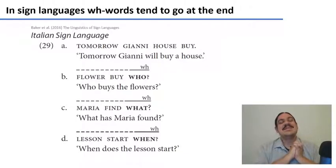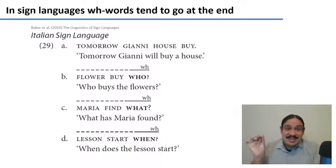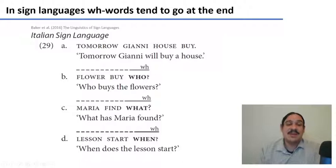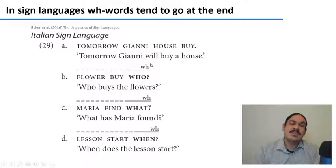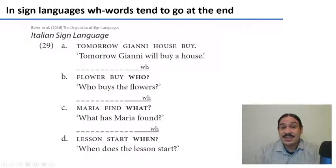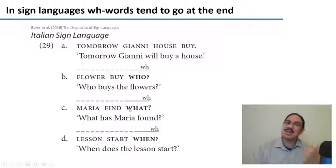Here is another example. This pattern of moving wh-words towards the end of the sentence is very prevalent in sign languages. For example, in Italian Sign Language: 'who buys the flowers?' becomes 'flower buy who?'; 'Maria find what?'; 'lessons start when?' In ASL and Italian Sign Language, and in most sign languages, you're going to find the question words at the end of the sentence, whereas in spoken languages you find them in the same place or at the beginning.